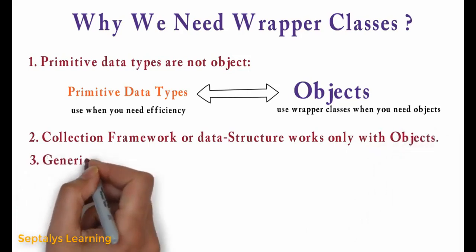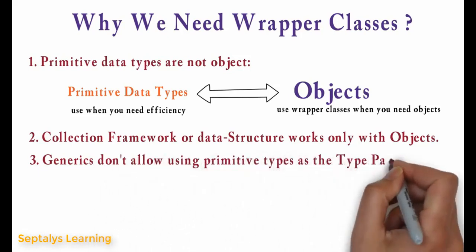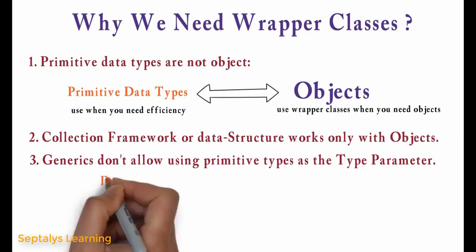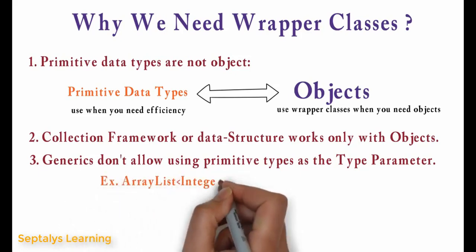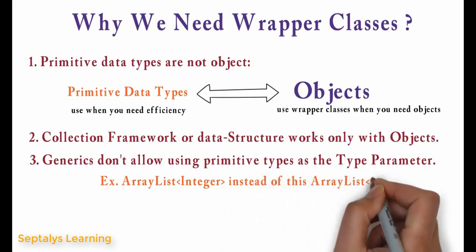Generics don't allow primitive data types as type parameters. Generics allow only objects. For example, ArrayList<Integer> is used instead of ArrayList<int>.